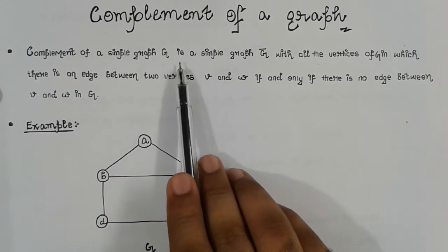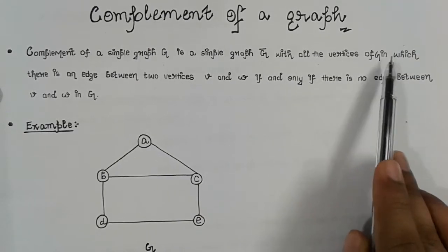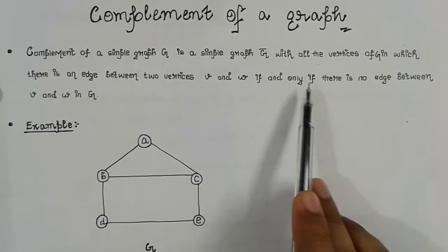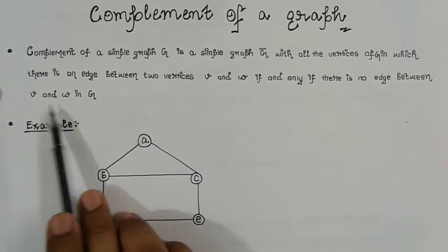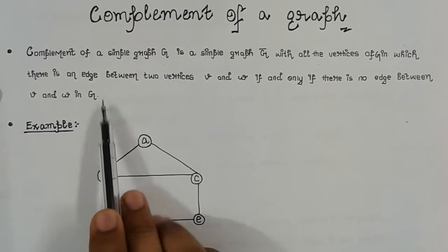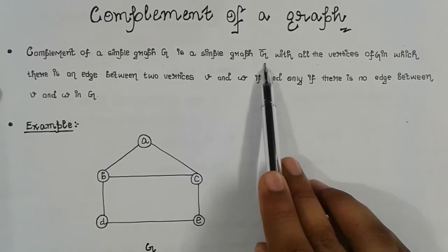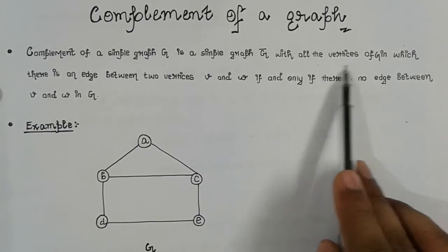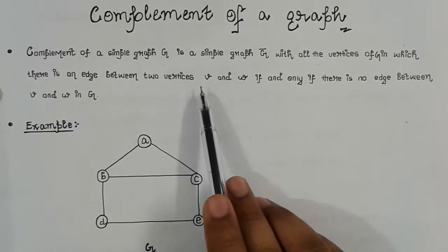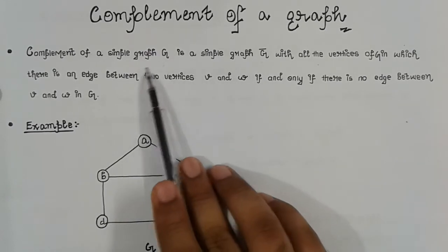Complement of a simple graph G is a simple graph G-bar with all the vertices of G, in which there is an edge between two vertices V and W if and only if there is no edge between V and W in G. So by this simple definition, the complement G-bar contains all the vertices of the original graph G, and all the edges which are not present in G.